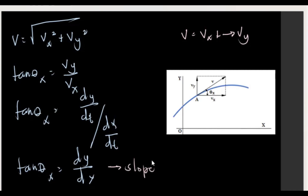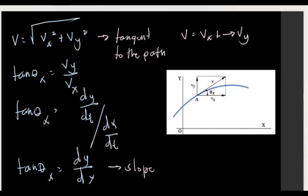It is evident that the slope dy over dx is the slope of the curve. This confirms that the velocity is tangent to the path — whatever the curve, the velocity vector we compute is tangent to that curve path. We used concepts of statics, trigonometry, and calculus for this derivation.